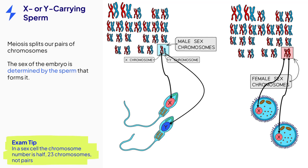Do note that in a sex cell, the chromosome number is halved from 46 — that's 23 pairs — to 23 individual chromosomes, so that when the sex cells fuse during fertilisation, there will be a full set of 46 chromosomes, or 23 chromosome pairs.